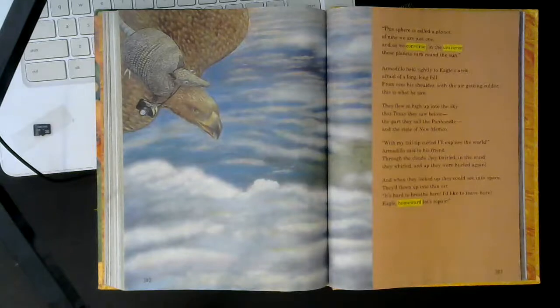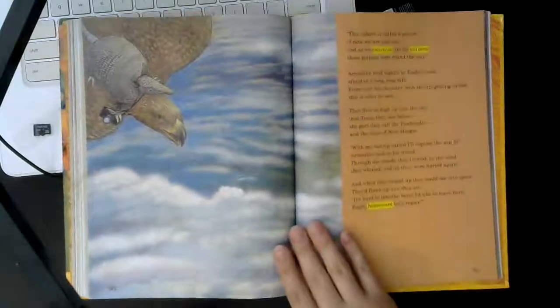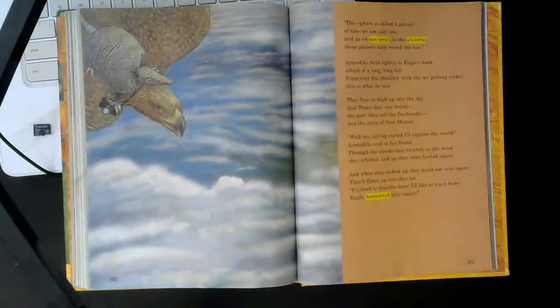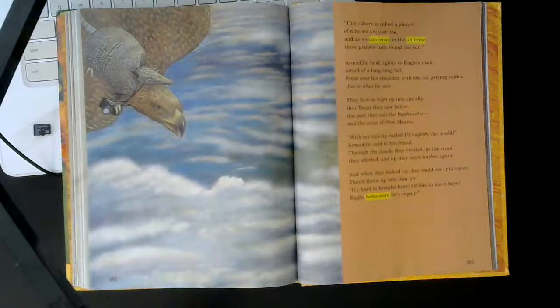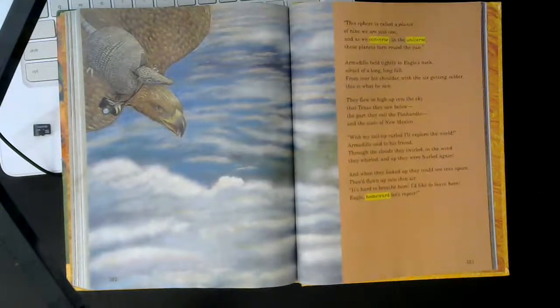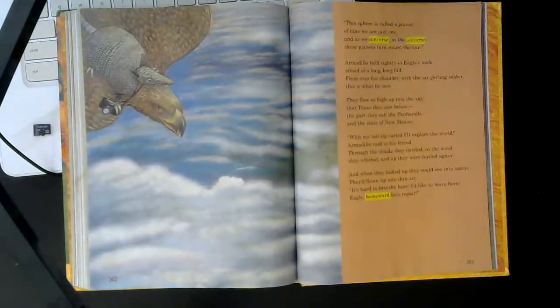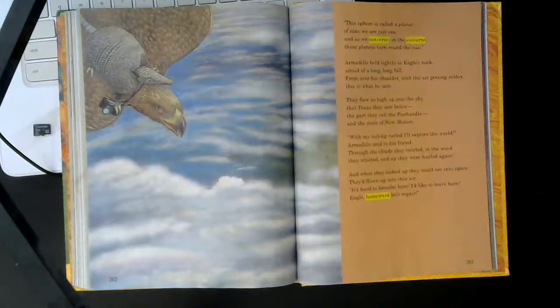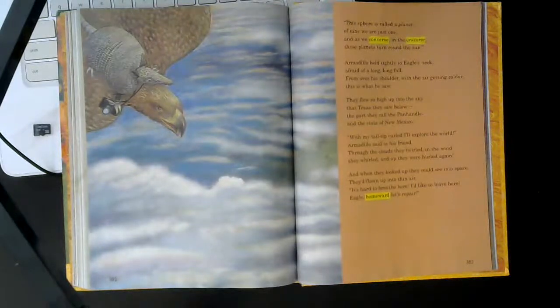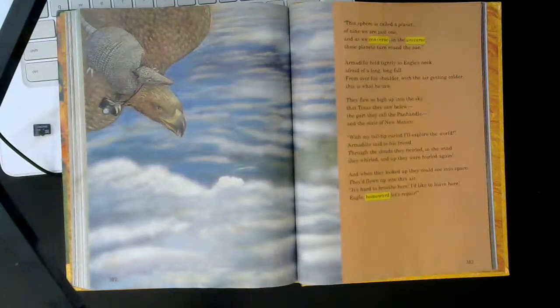They flew so high up into the sky that Texas they saw below, a part they call the panhandle with the state of New Mexico. With my tail tip curled, I'll explore the world, Armadillo said to his friend. Through the clouds they twirled in the wind, they whirled and up they were hurled again. And when they looked up, they could see into space. They'd flown up into thin air. It's hard to breathe here. I'd really like to leave here. Eagle, homeward, let's repair.